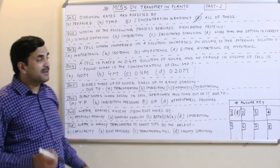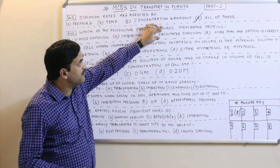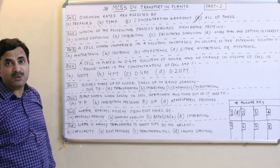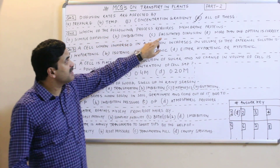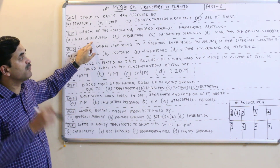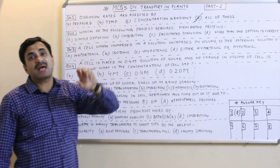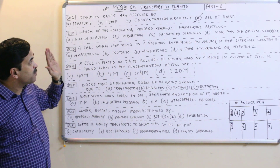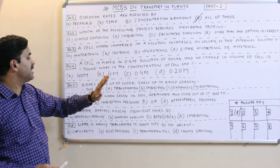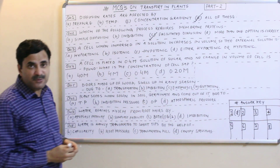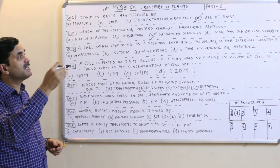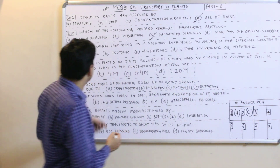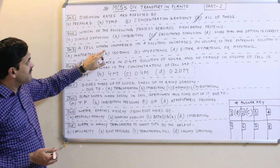Facilitated diffusion, like simple diffusion, occurs from high to low concentration, but the key difference is that facilitated diffusion always requires membrane proteins, while simple diffusion does not. So the process that requires membrane proteins is facilitated diffusion. The answer to question 2 is C.